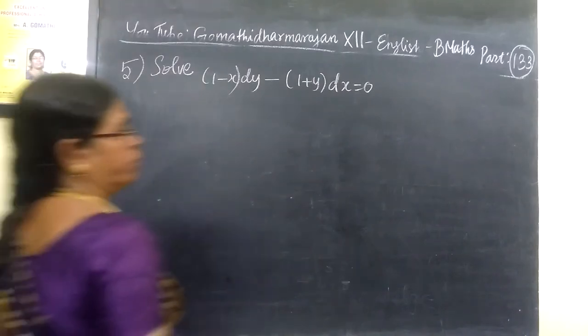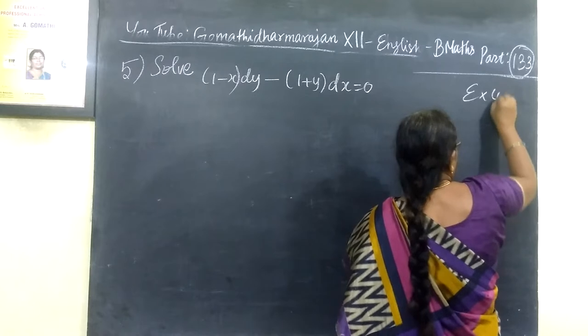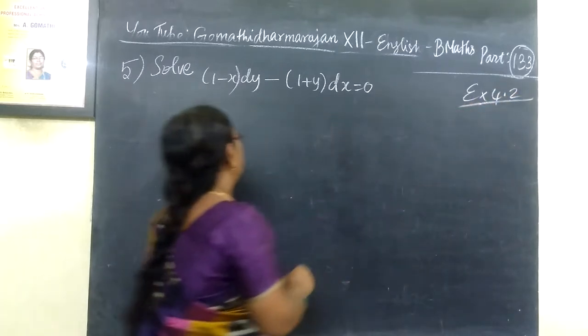So, now question number 5. We have passed the first business practice exercise 4.2. Now we are seeing the variable separate method.